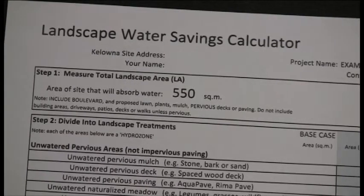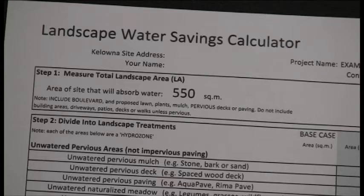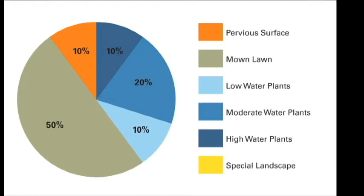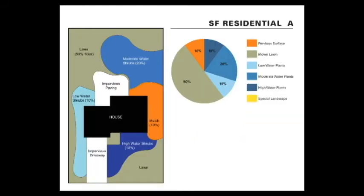Let's look first at Option A. Insert areas in square meters for each landscape treatment. It's useful to sketch a simple hydrozone diagram in plan view showing the areas of each treatment. Option A has 50% mowing lawn. Shrub areas are in three different hydrozones: high-water shrubs in the front yard, low-water shrubs in the side yard, and moderate-water shrubs in the back — together covering 40% of the total yard. A utility zone in the second side yard is a mulch surface without plants.